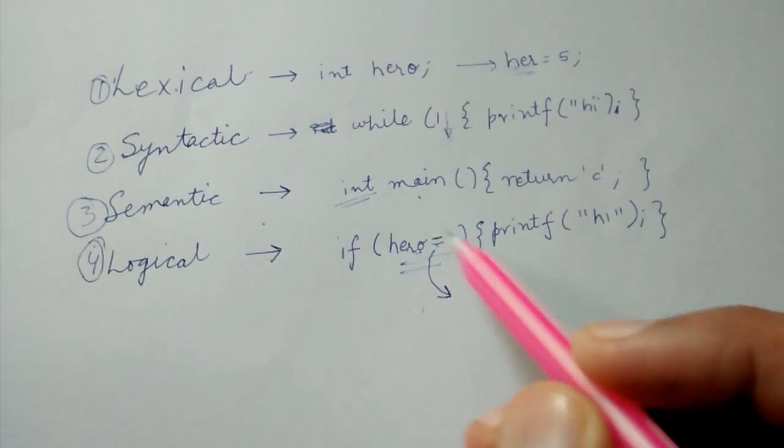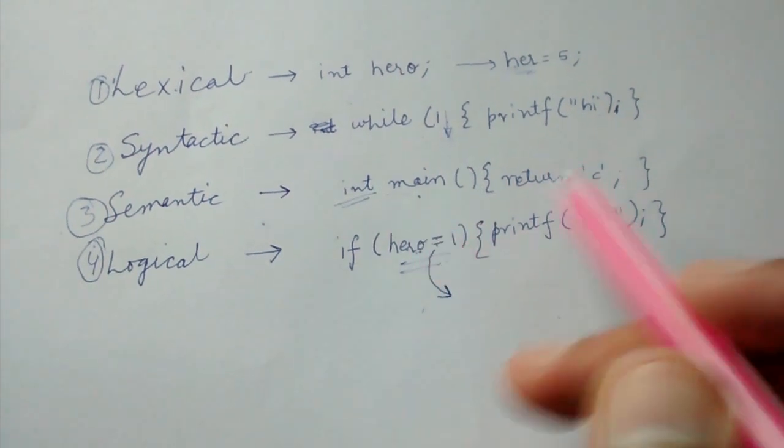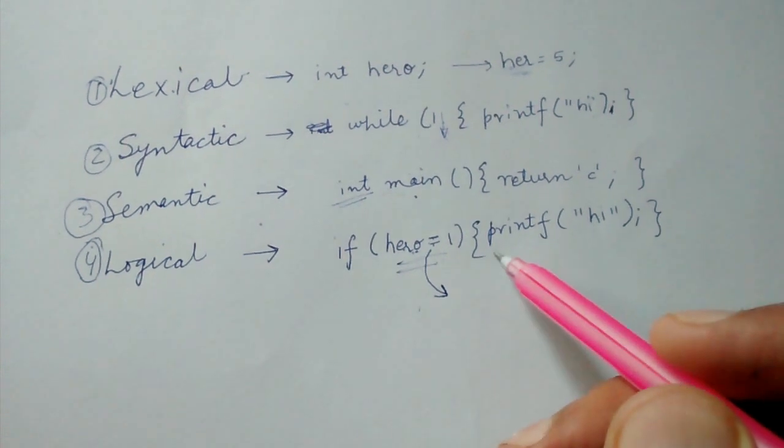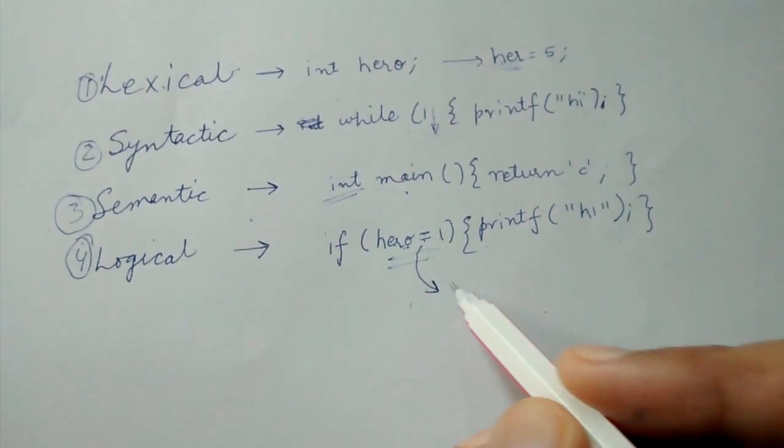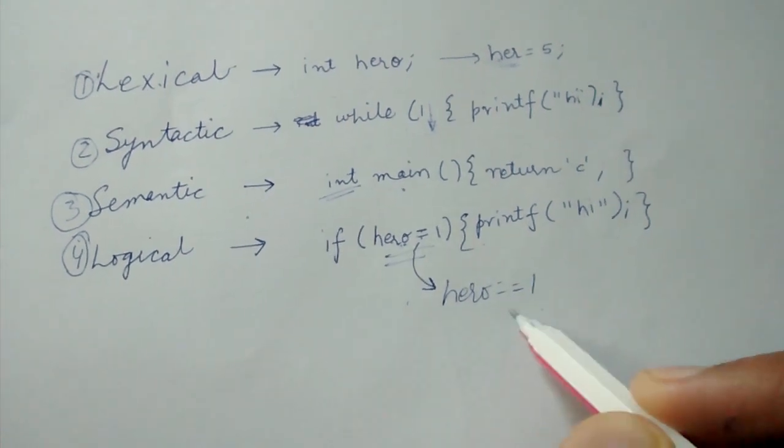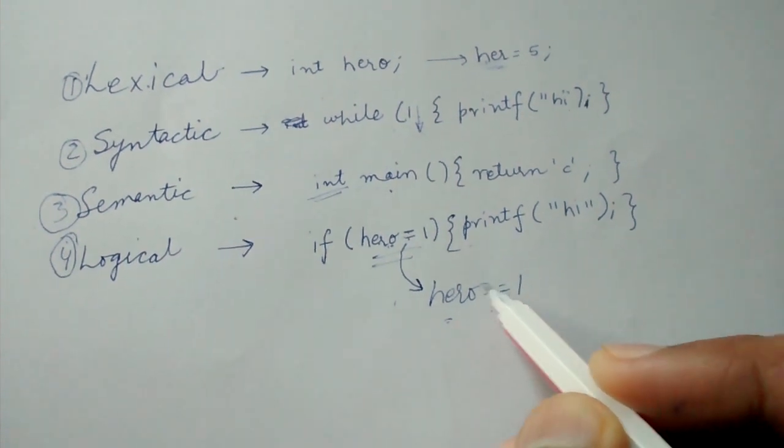This will assign the value and it will return 1 always, so this will always be executed. Basically we have to write hero equals equals 1 if we want to check the value of hero whether it is equal to 1 or not. So this is another kind of error.